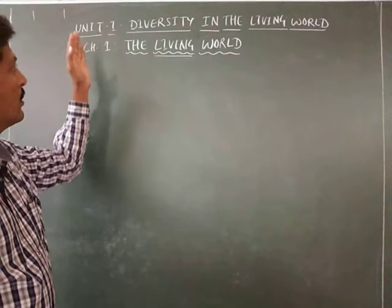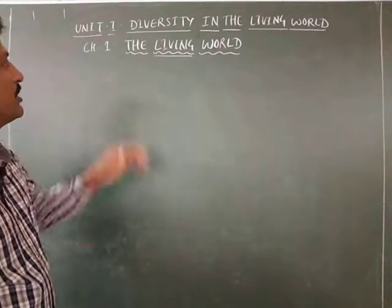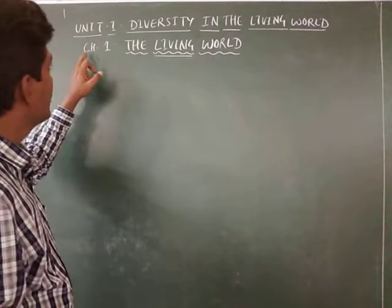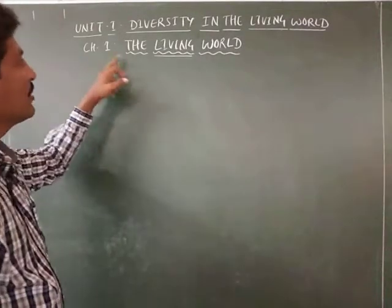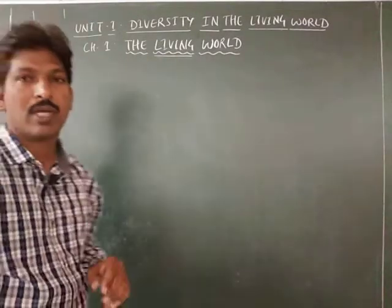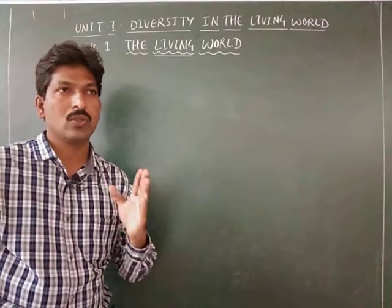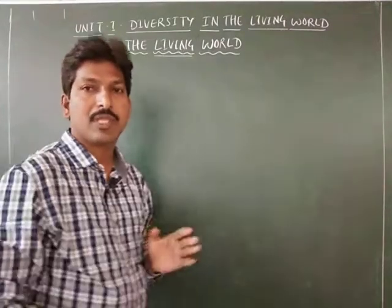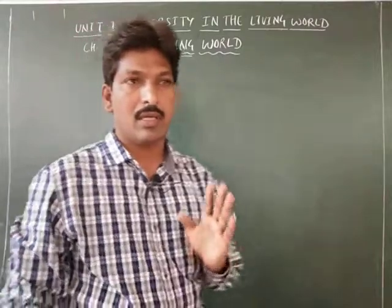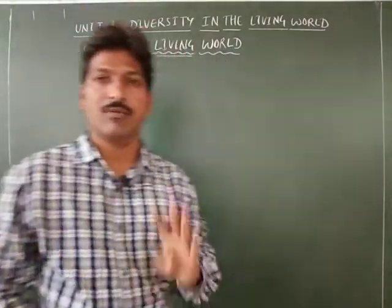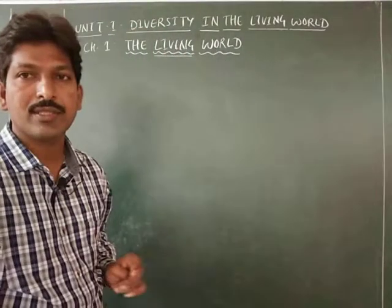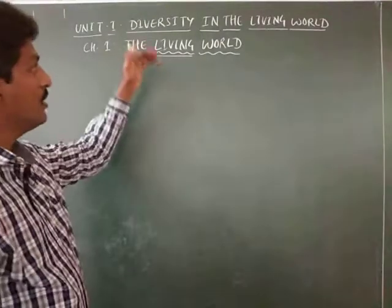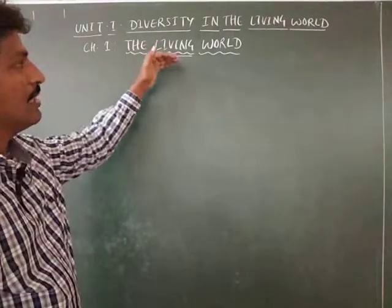In this first unit, there are four chapters. Chapter number one: The Living World. The second chapter is Biological Classification, the third chapter is Plant Kingdom, and the fourth chapter is Animal Kingdom. In this unit, we are discussing the living world.